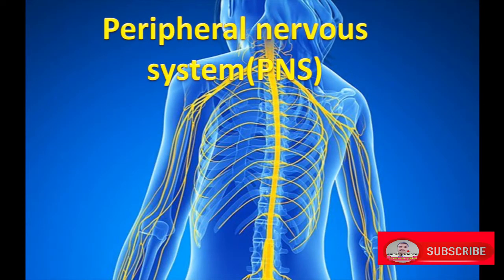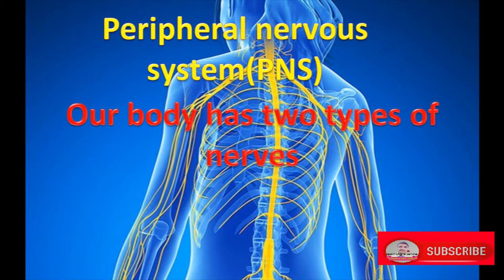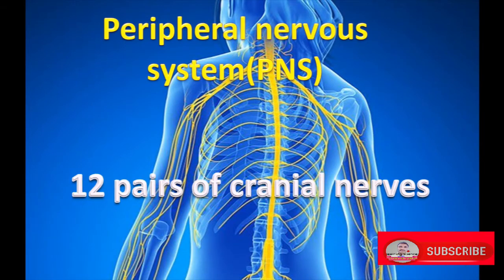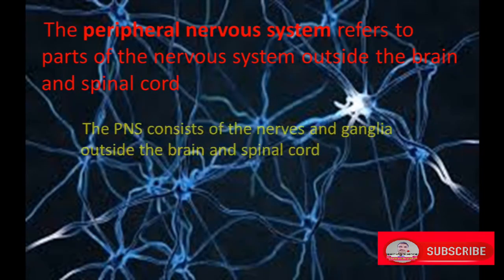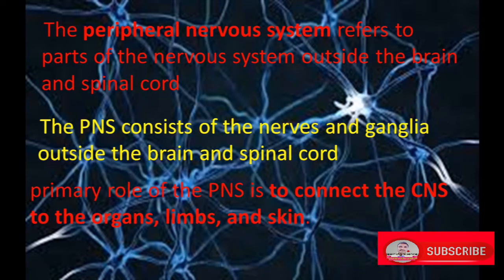Peripheral Nervous System, or PNS. Our body has two types of nerves: twelve pairs of cranial nerves and thirty-one pairs of spinal nerves. The peripheral nervous system refers to the parts of the nervous system outside the brain and spinal cord. The PNS consists of the nerves and ganglia outside the brain and spinal cord. Its primary role is to connect the central nervous system to the organs, limbs, and skin.